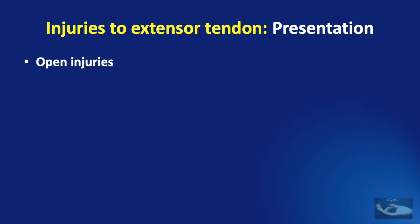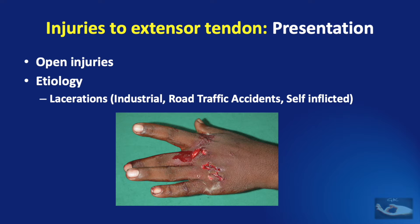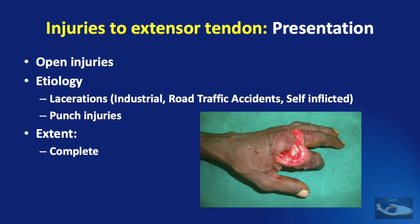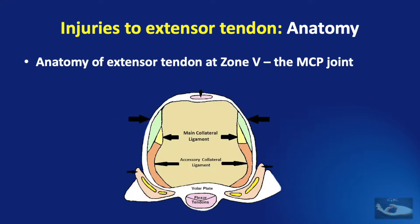These injuries usually present as open injuries due to lacerated wounds or incised wounds following industrial accidents, road traffic accidents or self-inflicted injuries, punch injuries or what are known as fight-bite injuries where the patient's knuckle hits the tooth of the opponent and results in an injury to the extensor tendon and a contaminated wound. The extent of the injury may be complete or partial.